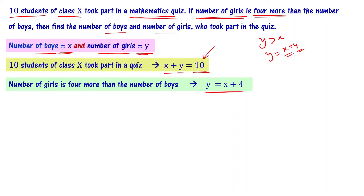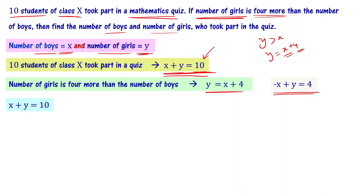We also have the equation: minus x plus y equals 4. We have two equations and we have to solve them. To solve this, we can use the elimination method, substitution method, or graph method. Let's use the substitution method. The first equation is x plus y equals 10, and we already know that y equals x plus 4.